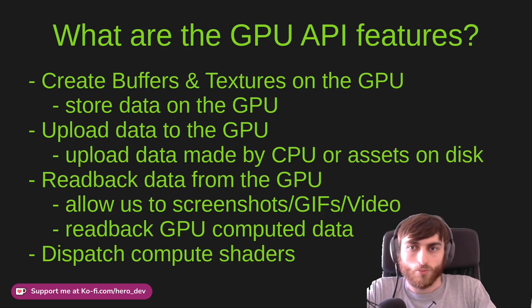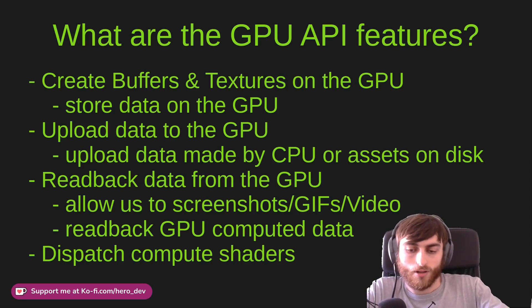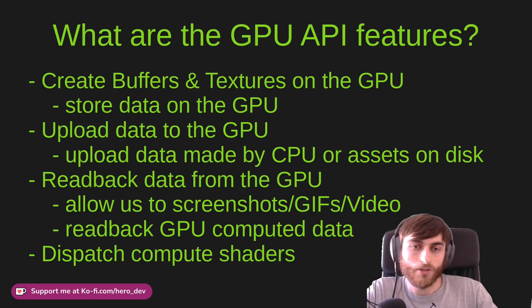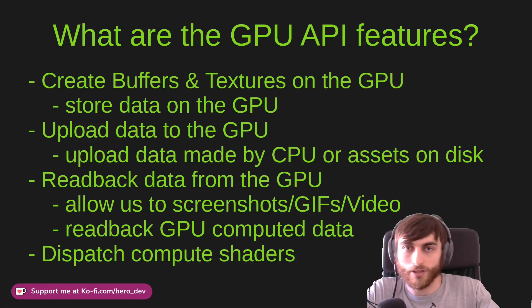So what are the GPU API features? Simply, we can create buffers and textures on the GPU, which allows us to store data on the GPU and have it manipulated by the GPU. Textures have everything cached efficiently for reading two-dimensional or three-dimensional images, that sort of thing.